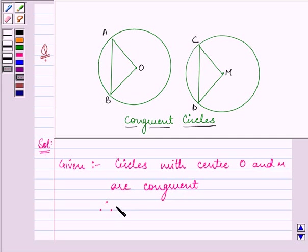So therefore their radii are equal to each other. That means OA equals OB equals CM equals MD.